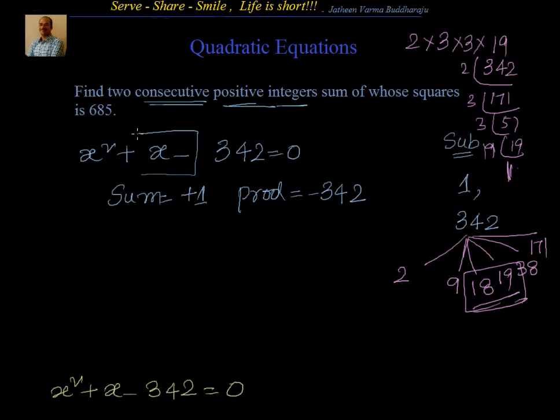There is also one easier way. Whenever you see that the difference is always 1 or 2, take the square root of this number. Here, the difference is 1 or 2 means almost they are equal. Find out approximately what is the square root. Square root is 18 plus. 18 square is 324 and 19 square is 361. That means these numbers should be somewhere around there, so you can check automatically for 18 and 19.